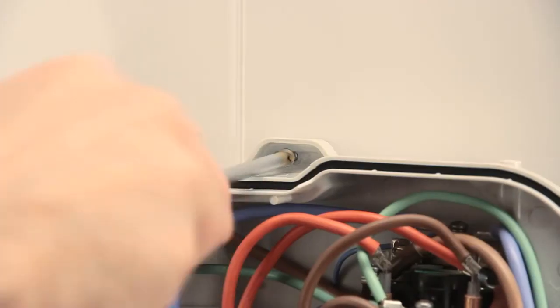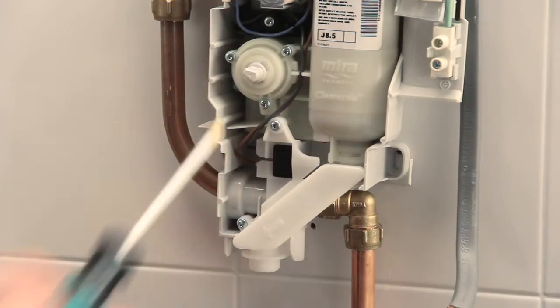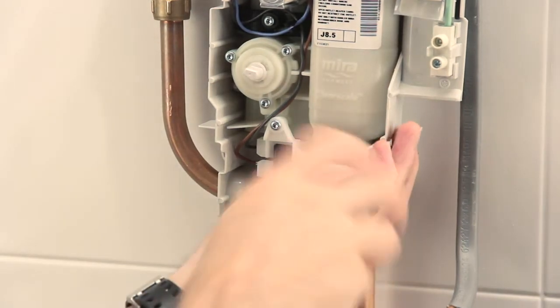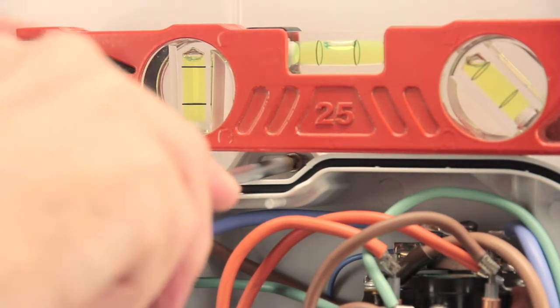Loosely secure the top fixing screw. Notice that this is positioned outside the unit seal to eliminate any water ingress into the unit. Hold the case to the wall with the other fixing screws and, using the slotted fixing holes to aid adjustment, ensure the unit is level before fully tightening.